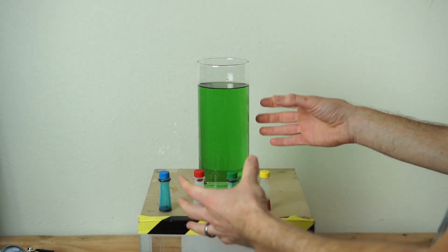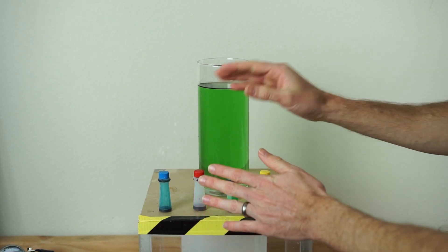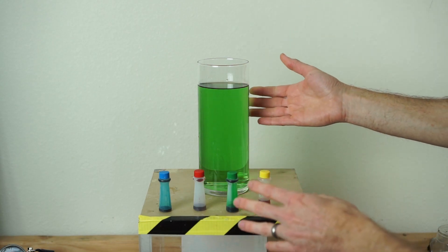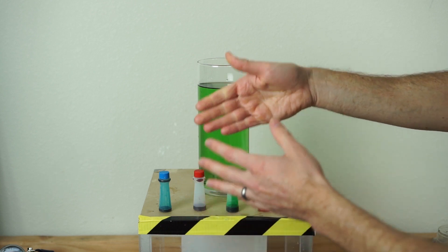But what if I could mix the liquid in such a way that I don't generate any turbulence? What if I use food coloring that was the exact density of the water and I used a high viscosity liquid so that when I stirred it, it stayed in laminar flow, meaning there's no turbulence.